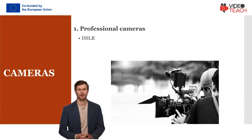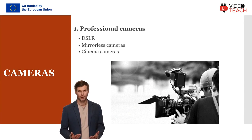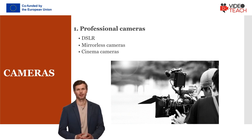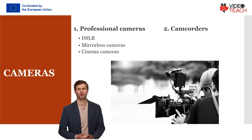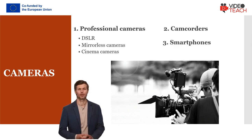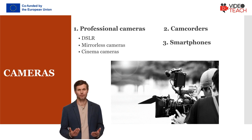Professional cameras like DSLRs, mirrorless cameras, and cinema cameras are commonly used for video production. These cameras offer a range of features, including interchangeable lenses, high-resolution sensors, and manual controls for focus and exposure. Camcorders are dedicated video cameras designed for shooting video content, and they often have built-in features like zoom lenses and image stabilization. Modern smartphones have advanced camera capabilities, making them a convenient option for shooting high-quality video content. You can learn more about this topic in our other video called Video Recording Devices.